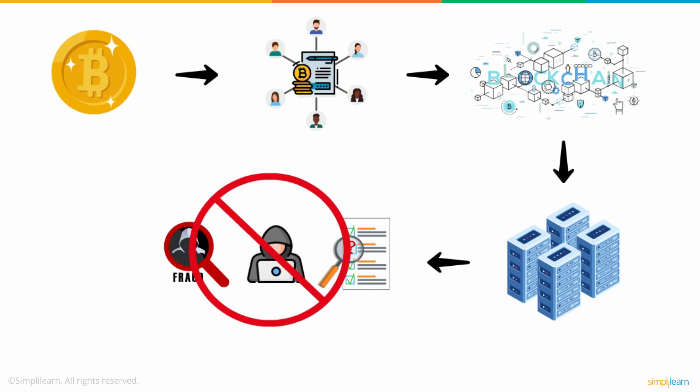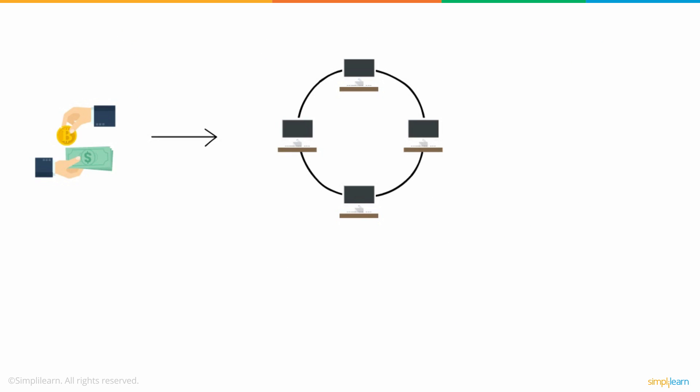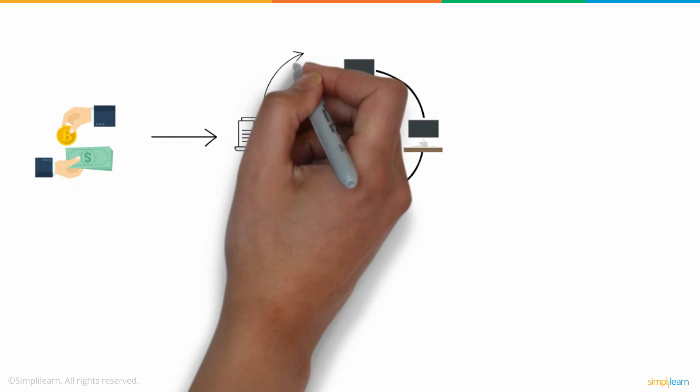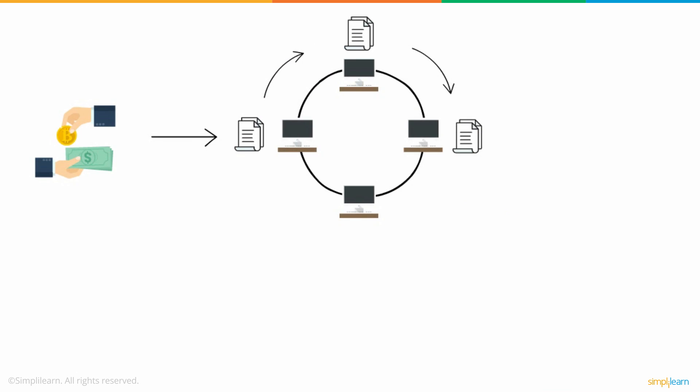A blockchain is simply a network of computer systems that maintains duplicate copies of all transactions in a digital ledger, disseminated throughout the network.